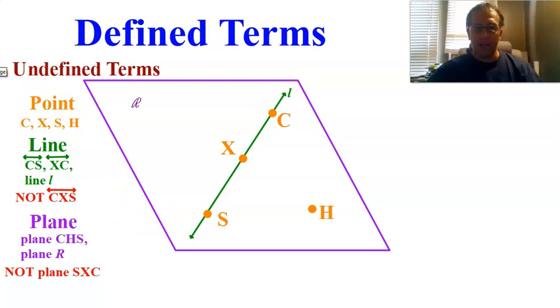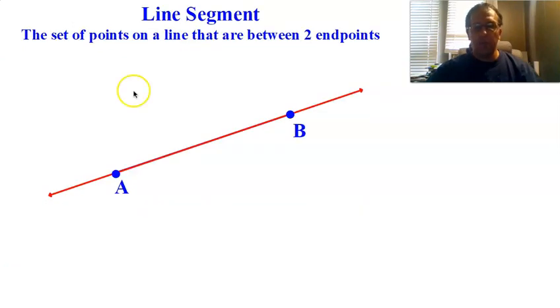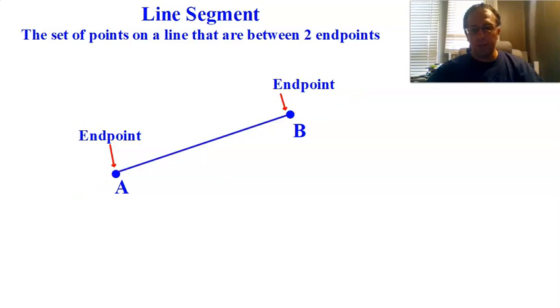Now we're going to get into defining some terms. So the first one we're going to talk about is a line segment. This is a set of points on a line that are between two endpoints. Notice it uses these undefined terms. It uses point and line to define line segments. So points on a line, we have all these points on a line between two endpoints. Well, A and B are my endpoints, so I only want the stuff between them. So I just want this bit right here. This is a line segment. You could also just call it segment. That's fine too.